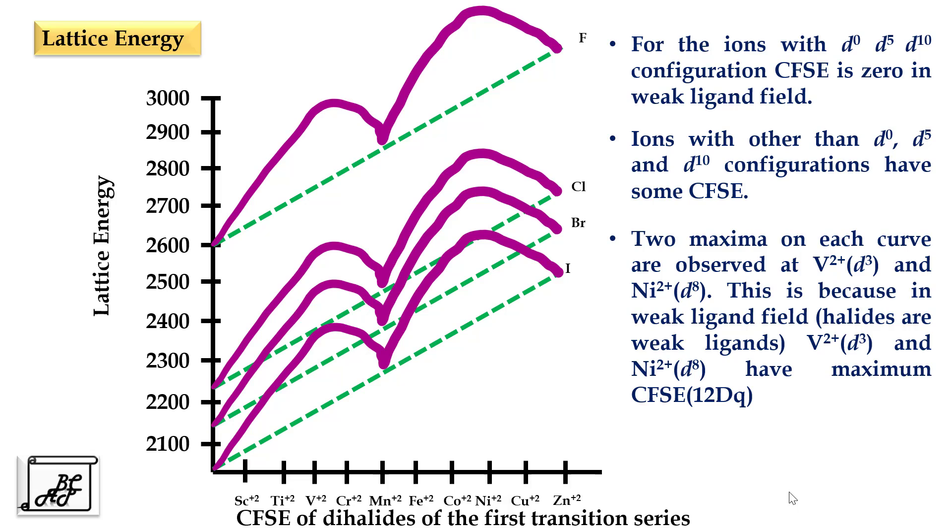Similar results, a double humped curve, is also observed in case of hydration energies of transition metals. These are the effects of crystal field splitting on magnetic properties, ionic radii, lattice energies, and hydration energies of transition metal complexes.